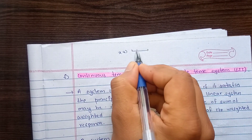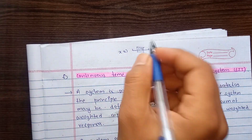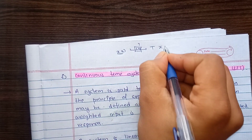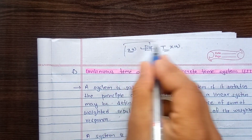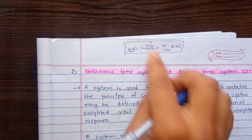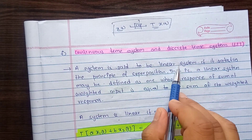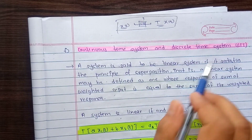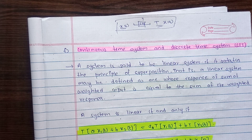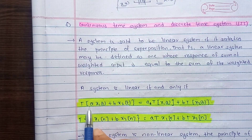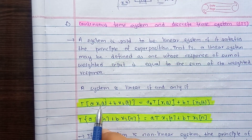Now, for an LTI (Linear Time Invariant) system with input Xt: the system is both linear and time invariant. This property is time invariant. A system is linear if it satisfies the principle of superposition — that is, the response of the sum of weighted inputs must be equal to the sum of the weighted responses. The weighted input is A·X1T + B·X2T.